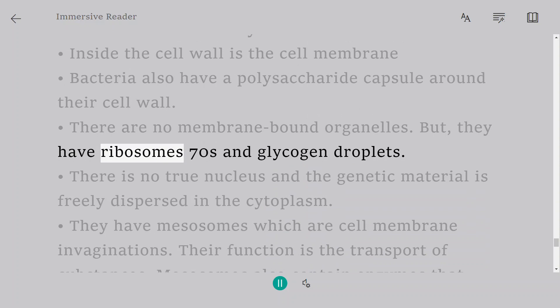There are no membrane-bound organelles. But, they have ribosomes 70s and glycogen droplets. There is no true nucleus and the genetic material is freely dispersed in the cytoplasm.